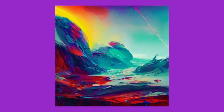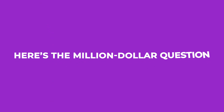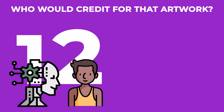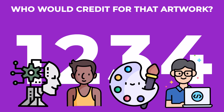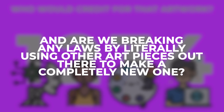Now, a little bit of the downside — our best friend and enemy: copyrights. You see how Stable Diffusion would dive into every corner of the internet to find relevant art pieces and combine them to make a new one. Here's the million-dollar question: who would get credit for that artwork? The AI? The one who entered the prompt? The original artist? The makers of the AI? And are we breaking any laws by literally using other art pieces out there to make a completely new one?